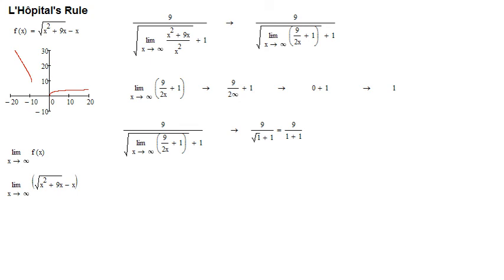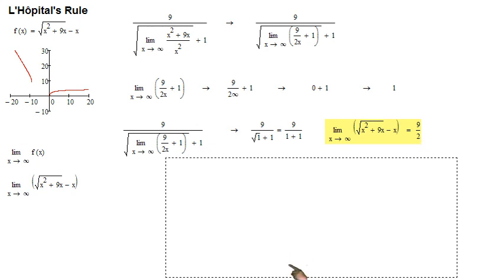So the final, final answer is 9 over 2. The limit as x goes to infinity of f of x equals 9 over 2. Or, in decimal form, 4.5.